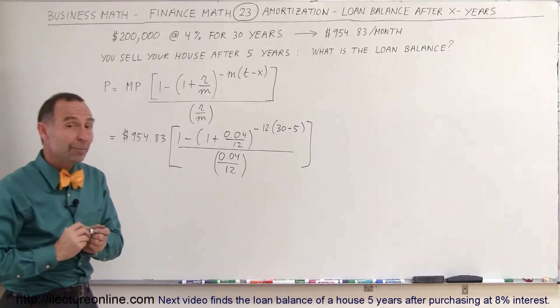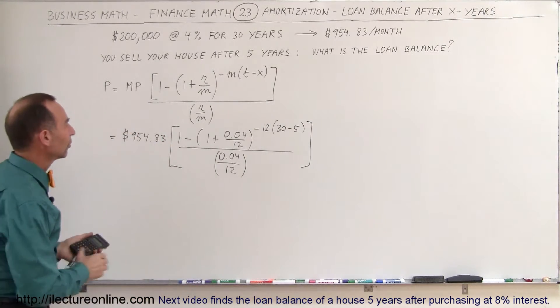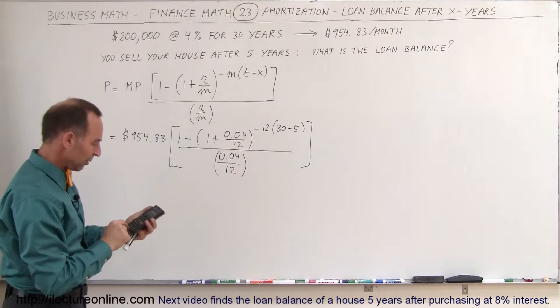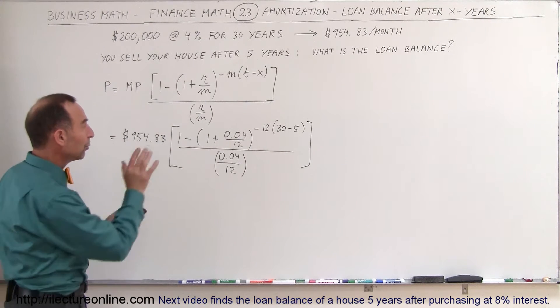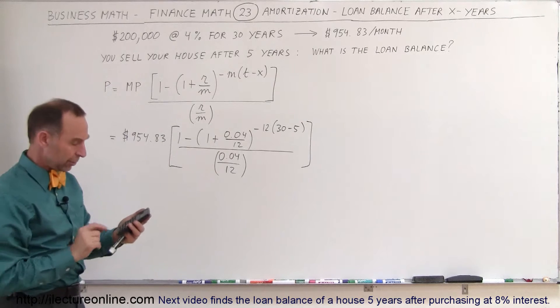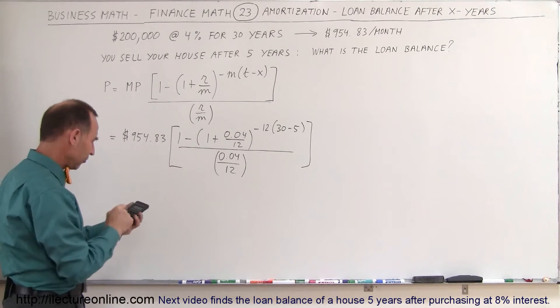All right, let's see what the remaining principal is after five years of making payments. So again, we start with this portion right there. We go 0.04 divided by 12, plus 1. We raise that to the minus 300 power, so we subtract that from 1.